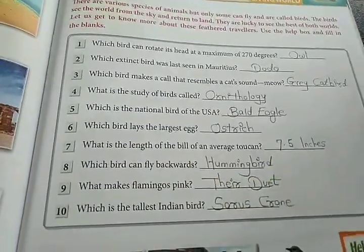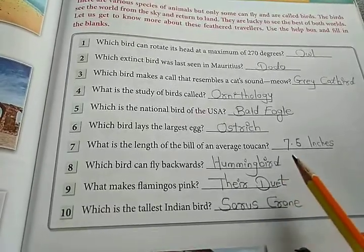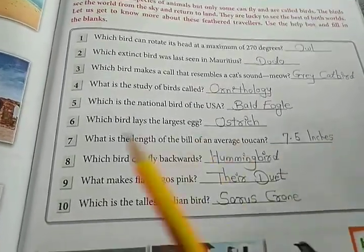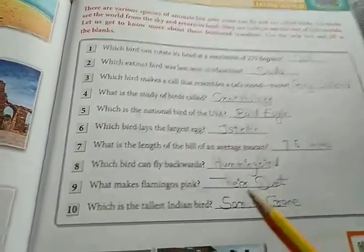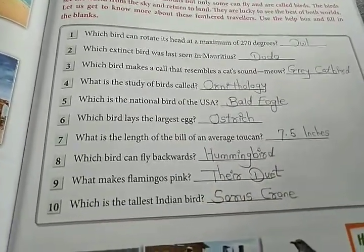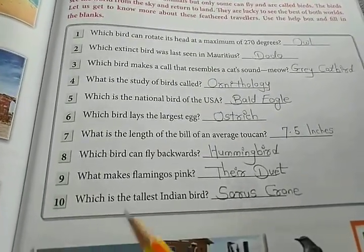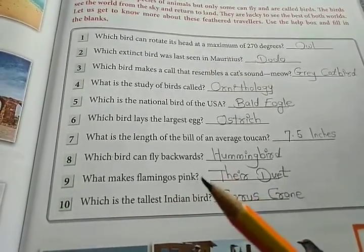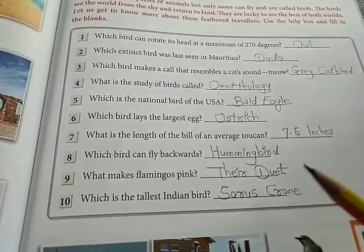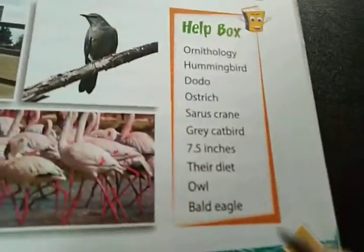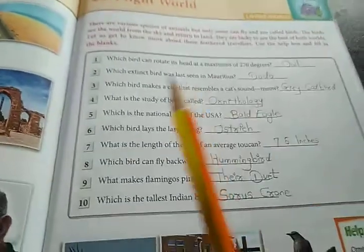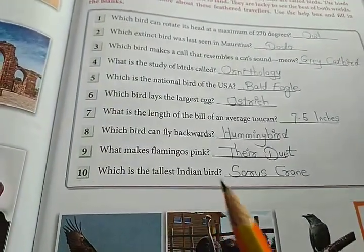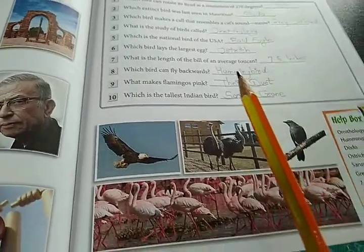What is the length of the bill of an average toucan? It is about 7.5 inches. Question 8: which bird can fly backwards? That bird is hummingbird. Then what makes flamingoes pink? That is their diet. Then 10th question: which is the tallest Indian bird? That is Sarus crane. Sarus crane is the tallest bird in India.